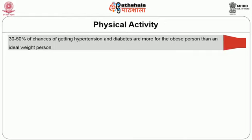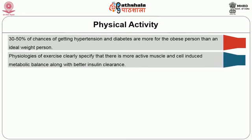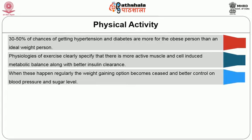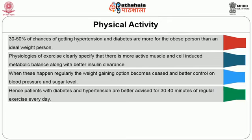Thirty to 50 percent chances of getting hypertension and diabetes are more for those people who are obese than an ideal weight person. Exercise clearly specifies more active muscle and cell-induced metabolic balance along with better insulin clearance. When these happen regularly, weight gain is controlled and better control over blood pressure and sugar level is achieved. Patients with diabetes and hypertension are better advised for 30 to 40 minutes of regular exercise every day. Exercise can be simple walking and other aerobic exercises, conducted under the supervision of a medical doctor or therapist.